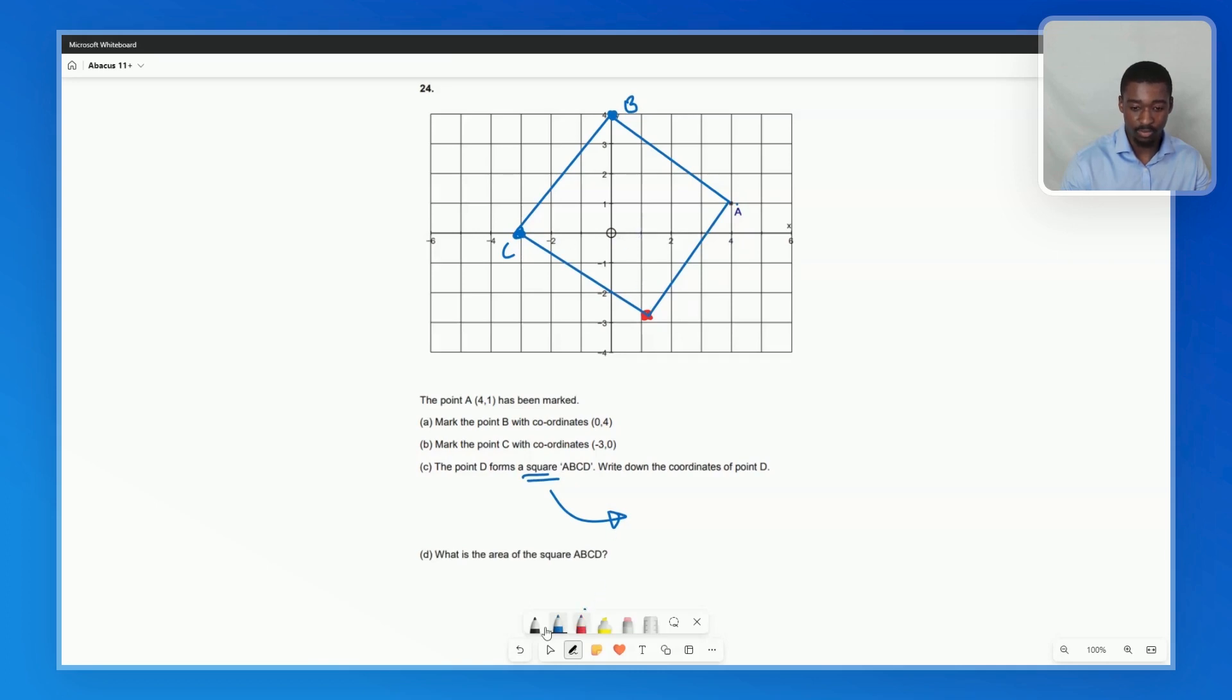And if we did it differently, let's say 1, 2, 3 across, then 1, 2, 3, 4 down, that would have given us a point here, which when we join it up, does not look like a square. And therefore, we can be pretty confident that this point that we drew out, 1, 2, 3, 4 across, 1, 2, 3 down, is indeed the final coordinate that completes the square.